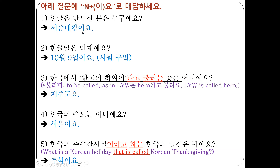세종대왕이요. In class, I saw that some students said 세종이요. 세종 is not your friend, okay? You have to add 대왕 — the great king 세종. 자, 시월 9일이요. Many students got the answer correct. But pay attention to the pronunciation — we never say 십월, we say 시월. 세종대왕 ends with a consonant, so we added 이요. 시월 9일 also ends with a consonant, so 이요.